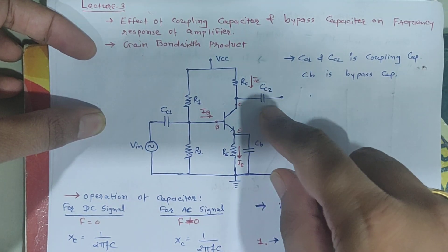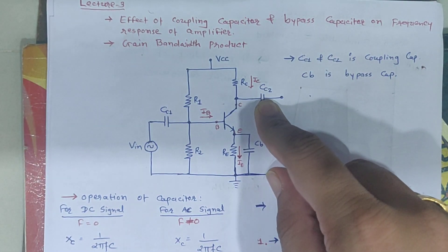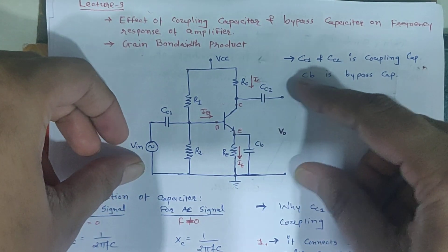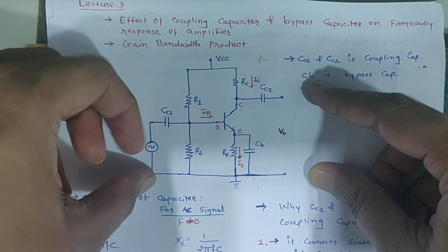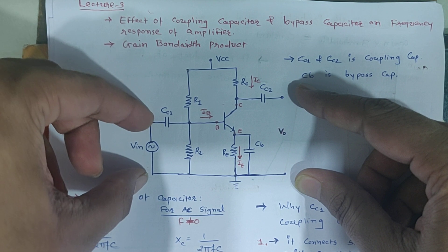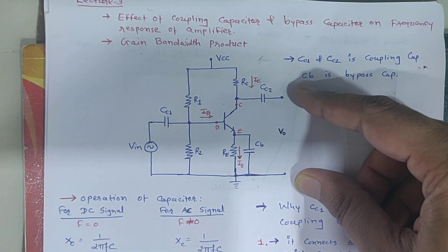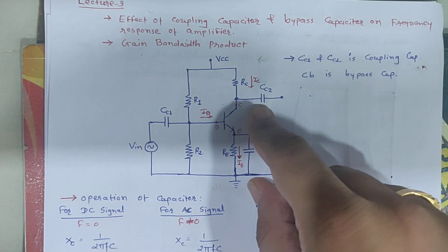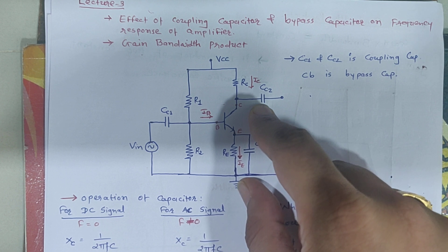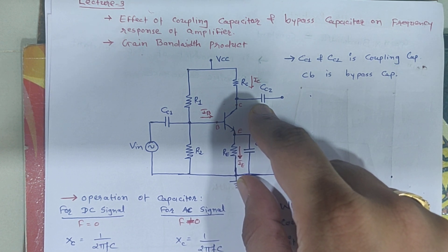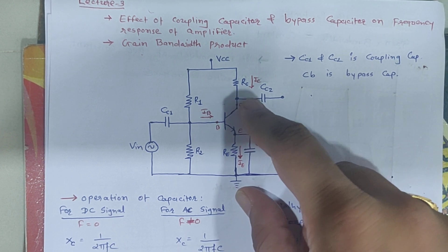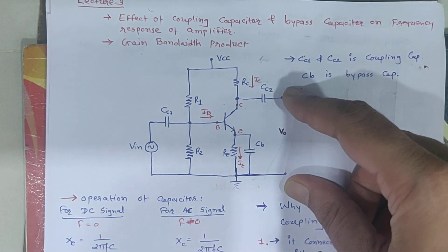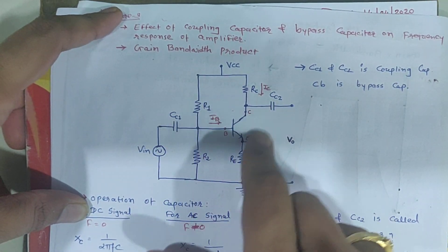At the output side, we have connected coupling capacitor CC2. We require only the AC output, which is the amplified signal of the input. To get only the AC output signal, CC2 is connected here — this capacitor will block the DC current at the output side.